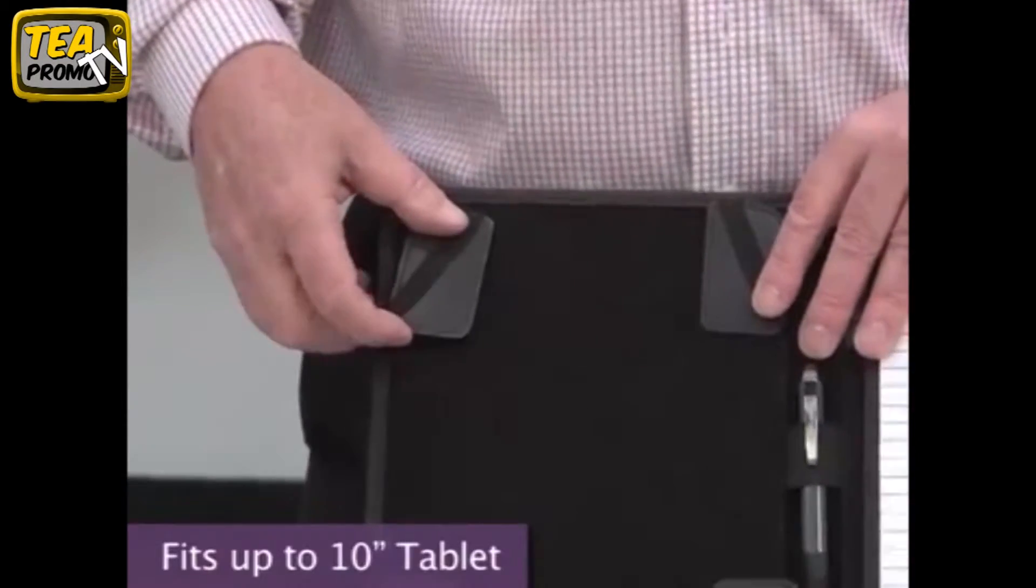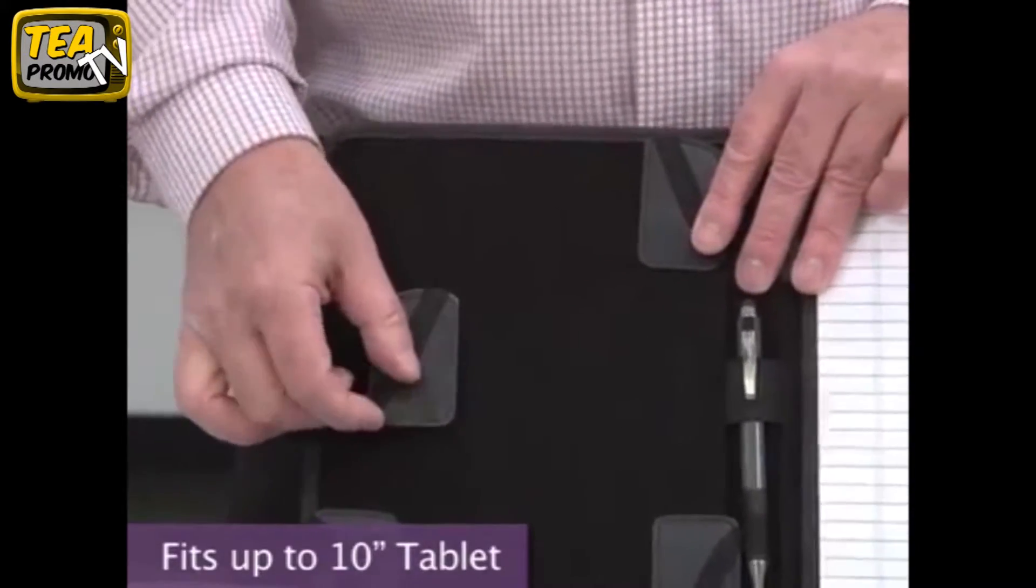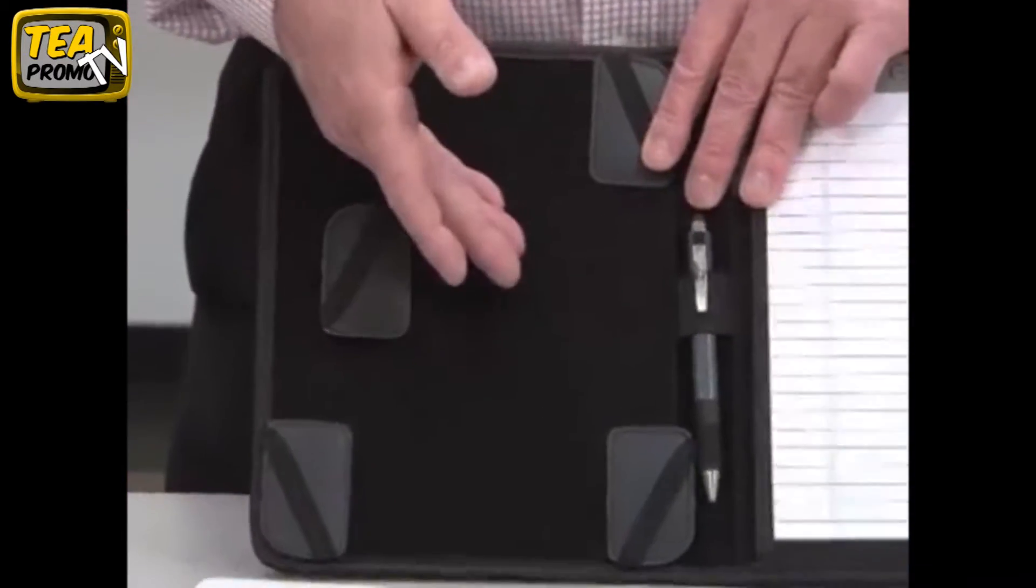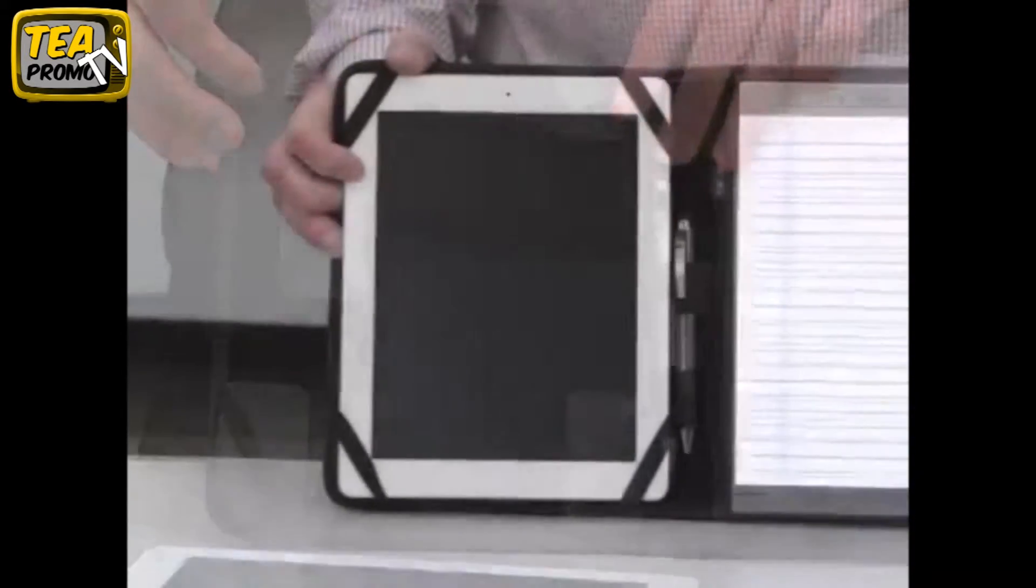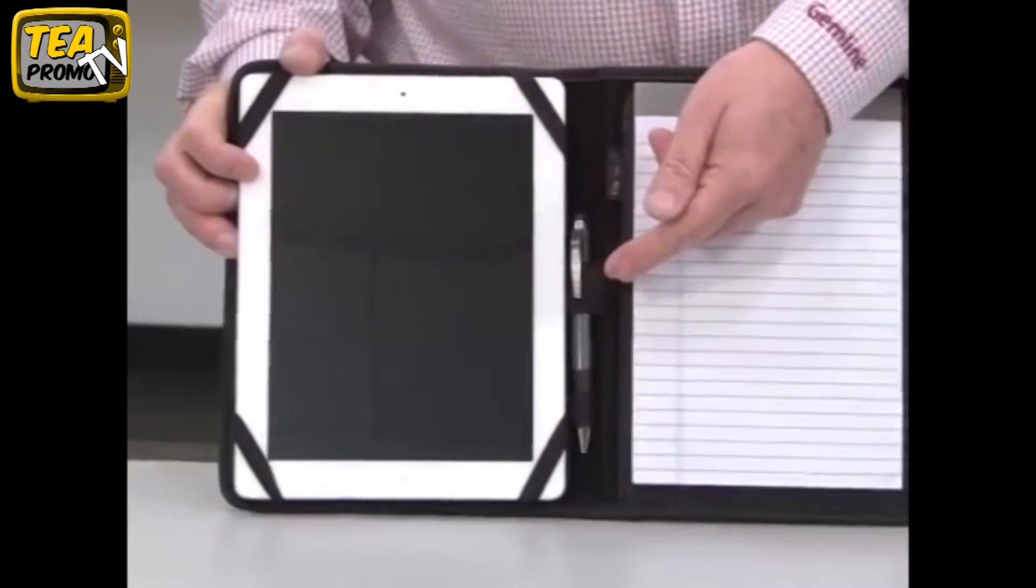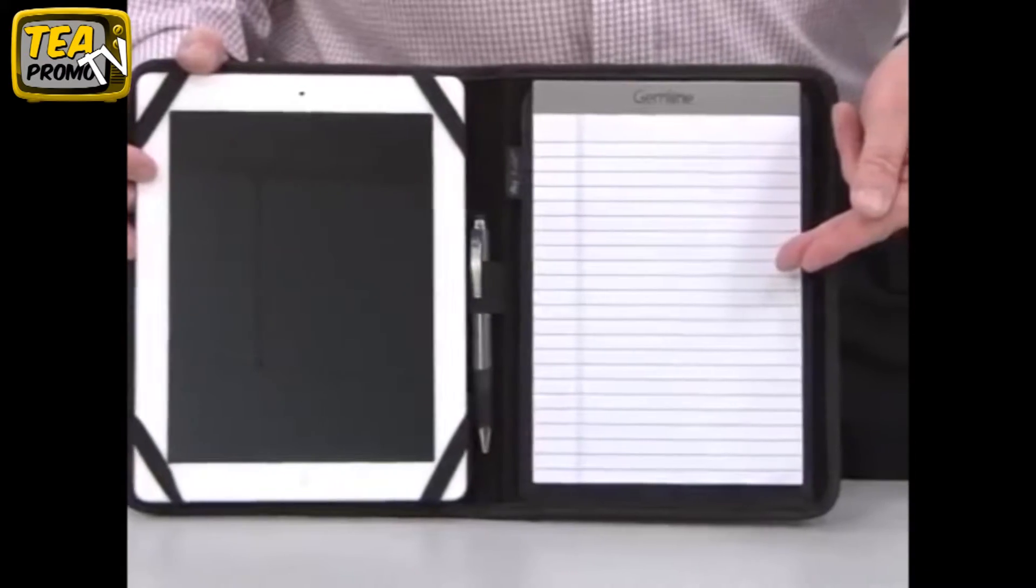On the inside you'll find removable velcro corners to accommodate various sized tablets and a scratch resistant lining. Also included is a stylus or pen loop and a 6x9 pad of paper.